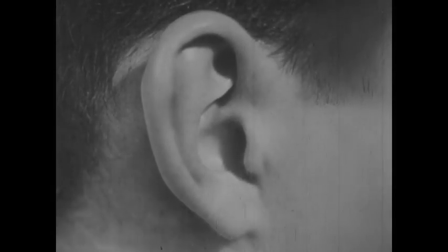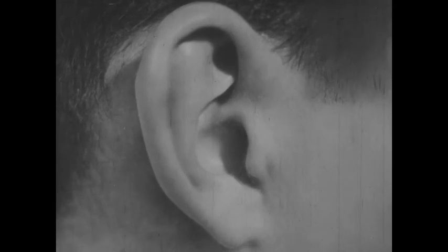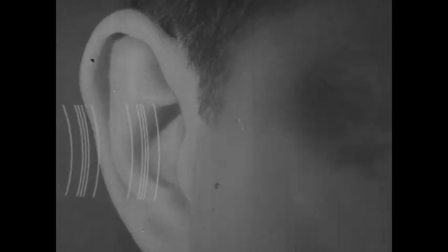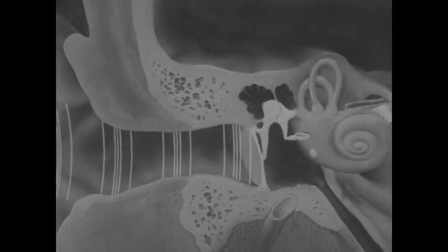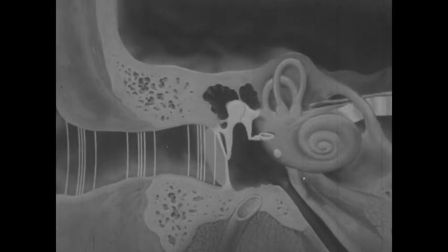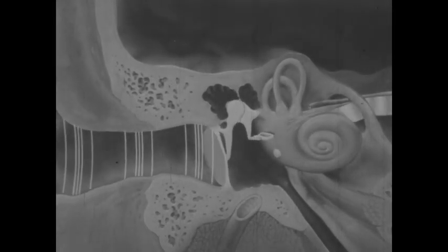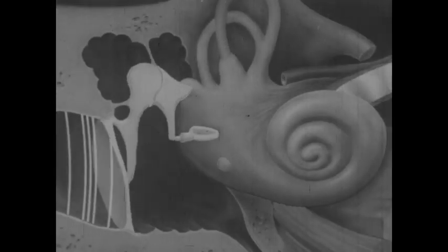Sound waves enter the ear through an external opening. Here we show the path taken by the ear. First, the sound waves pass through an outer part of the ear, called the outer ear. As the eardrum vibrates, it moves the chain of three tiny bones connected with it. These bones are in the middle part of the ear, called the middle ear.